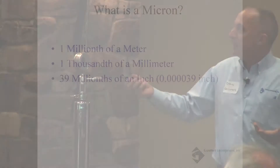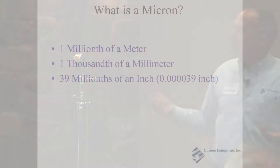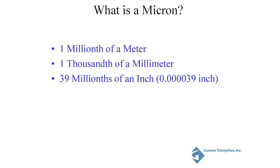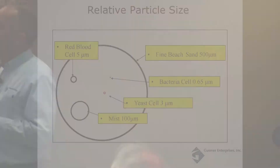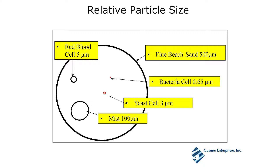We've had a lot of talk this morning about microns, and it begs the question of what is a micron? Rob defined it as one millionth of a meter — 39 millionths of an inch. This large circle would be a fine grain of sand, about 500 microns in diameter. A drop of mist is about 100 microns. A red blood cell is about 5 microns. Your yeast cell and bacteria are at 3 microns and 0.65 microns. This picture puts it in perspective.